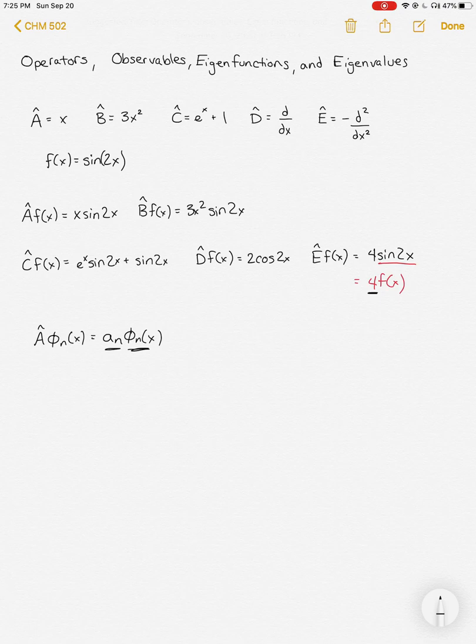Typically, there are going to be many different eigenfunction solutions for a given operator. For our operator E here, we saw that our function sine of 2x was an eigenfunction. But you know what else would be an eigenfunction? Well, sine of x, or sine of 3x, and any sort of sine functions, or sine and cosine, or sum of sines and cosines, would be an eigenfunction of this operator. Because when you take two derivatives of a sine or cosine function, you return a sine or cosine function multiplied by a constant.